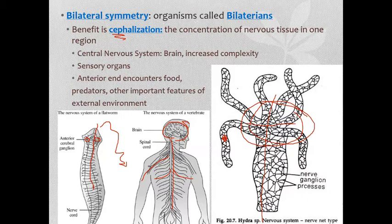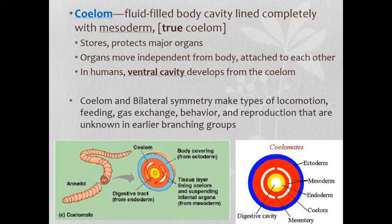One other characteristic developed by many bilaterians — not all of them — is the development of what is called a coelom. This is a body cavity lined with mesoderm tissue. Not all bilaterians have a coelom, but it is very important in developing more complex structures. Let's watch a clip showing the coelom in different organisms and talking about why exactly this is so important.